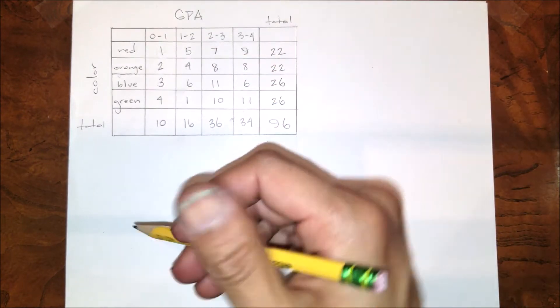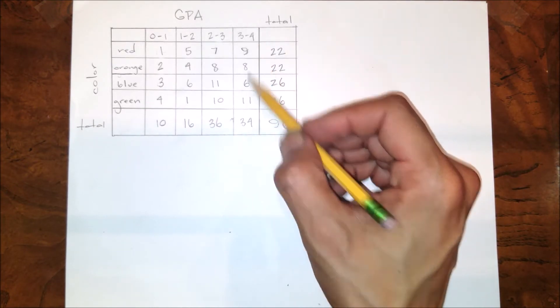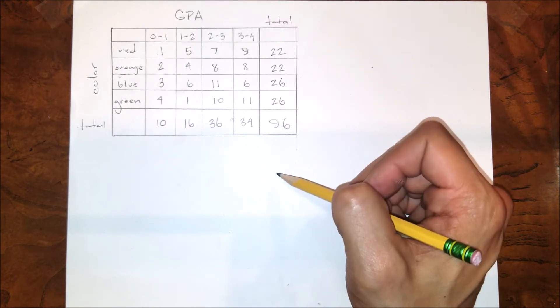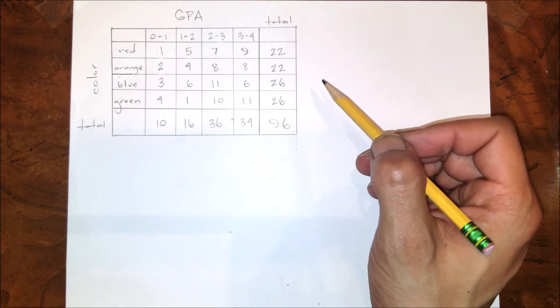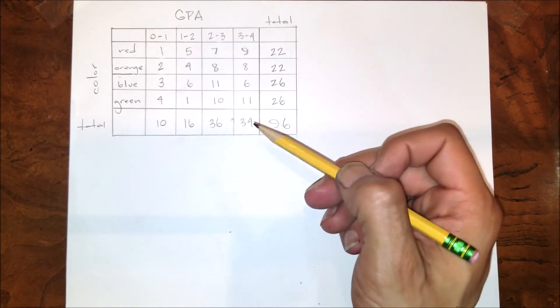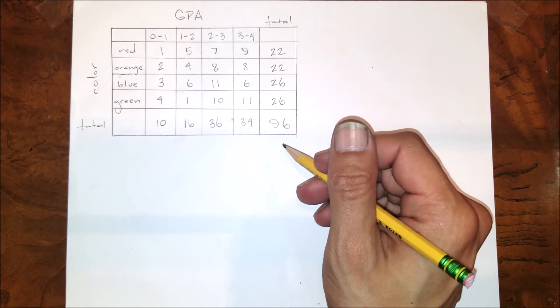Now this data can be especially useful in your IA because from this data you can talk about specifically what percentage of your population had between a 3.0 and 4.0 - 34 out of 96. What percent of my population preferred blue as a color? 26 out of 96. These are other things in the simpler math processes that you can include in your paper.